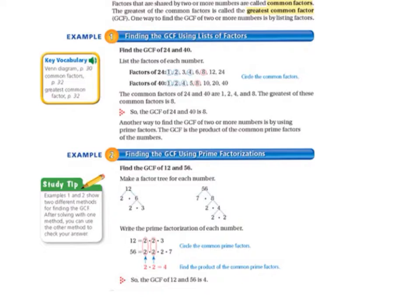Factors that are shared by two or more numbers are called common factors. The greatest of the common factors is called the Greatest Common Factor, or the GCF. One way to find the GCF of two or more numbers is by listing factors.